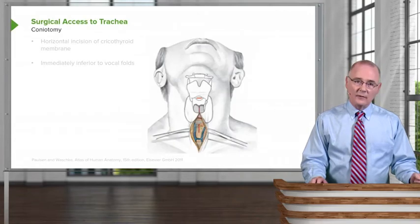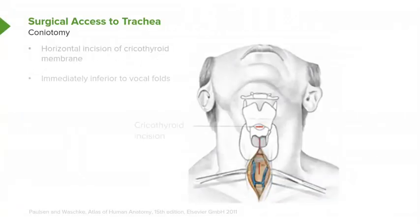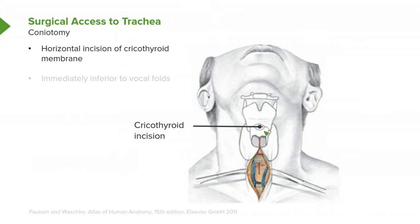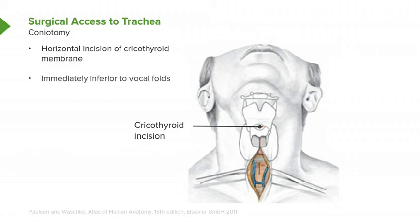We'll begin with the coniotomy, or simply the crike. The relevant anatomy is the area between the inferior portion of the thyroid cartilage of the larynx and the cricoid cartilage, which lies inferior to the thyroid cartilage — we'd be right up along its superior border. Running between these two laryngeal cartilaginous structures is the cricothyroid membrane. One would get to this level surgically, then a horizontal incision would be performed, and the patient could be ventilated. This area in a coniotomy is immediately inferior to the vocal cords or folds.